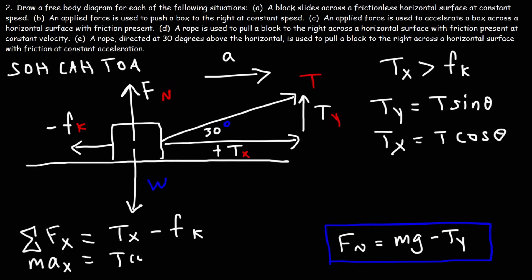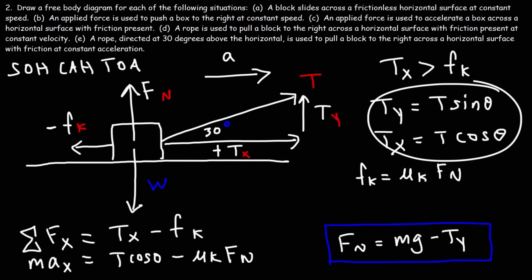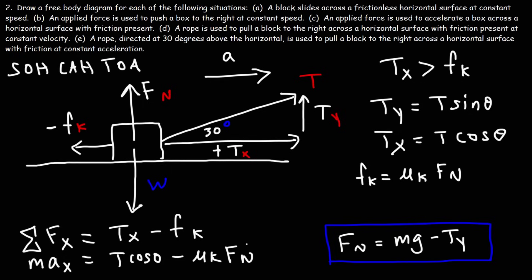Tx is T cosine theta. Fk equals mu k times the normal force, and in this example the normal force is mg minus Ty. So first calculate Tx and Ty, then calculate the normal force, and then you have everything you need to calculate the acceleration. That's how we find the acceleration in the x direction using that formula.